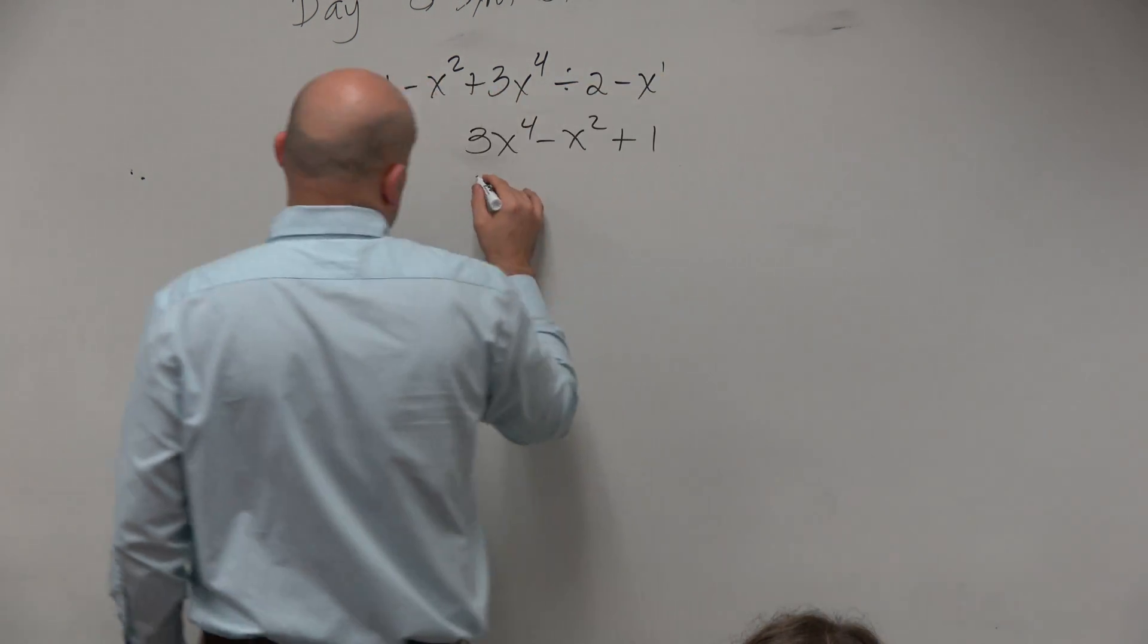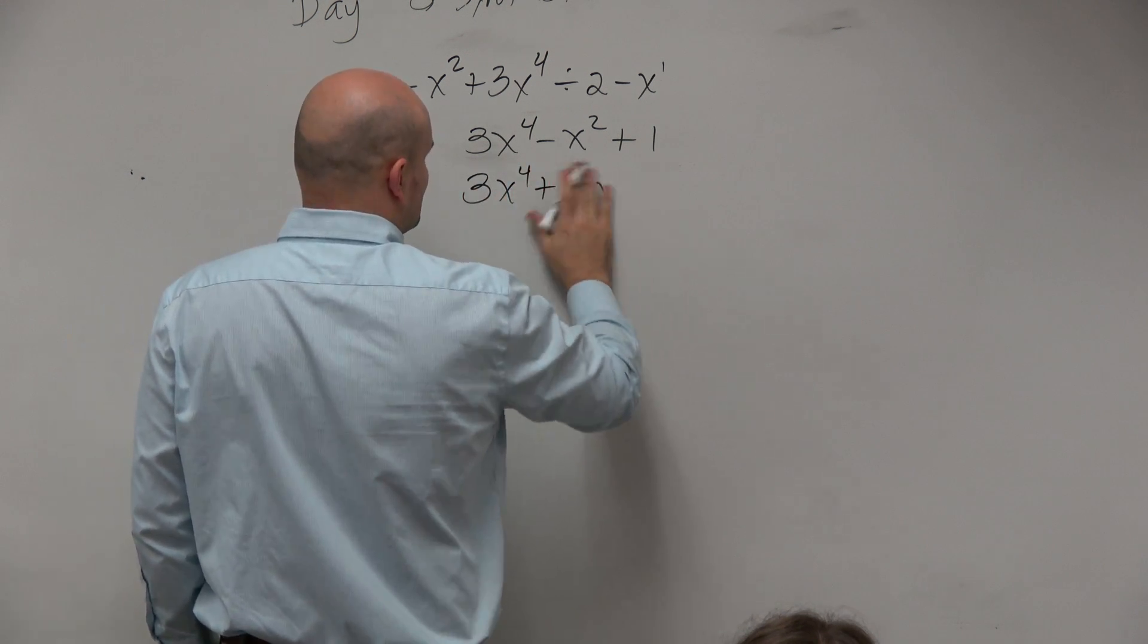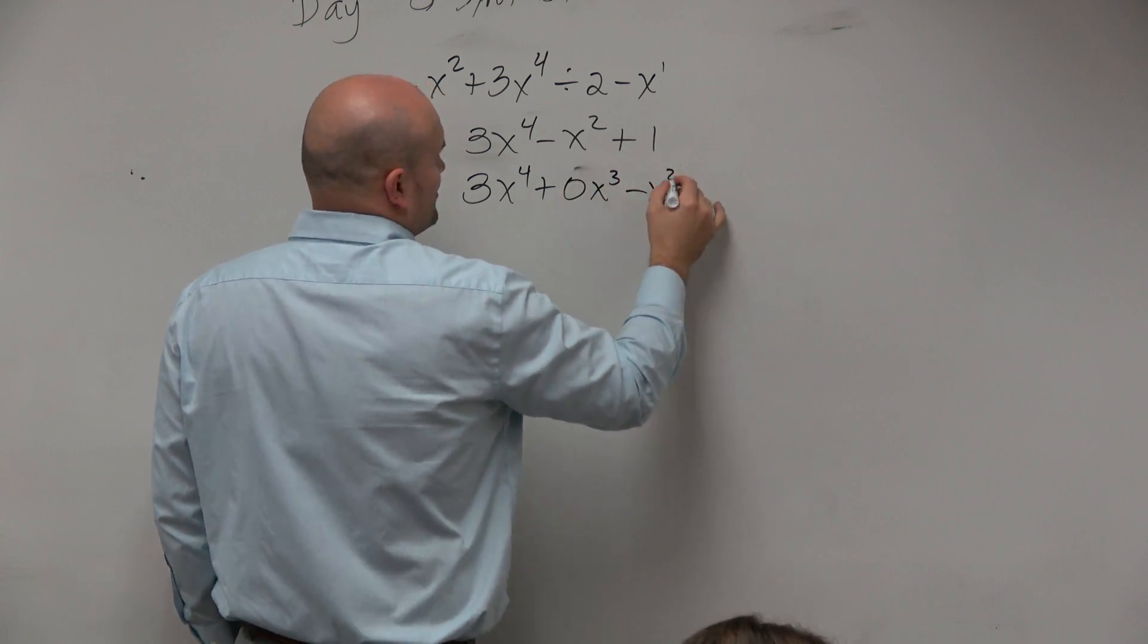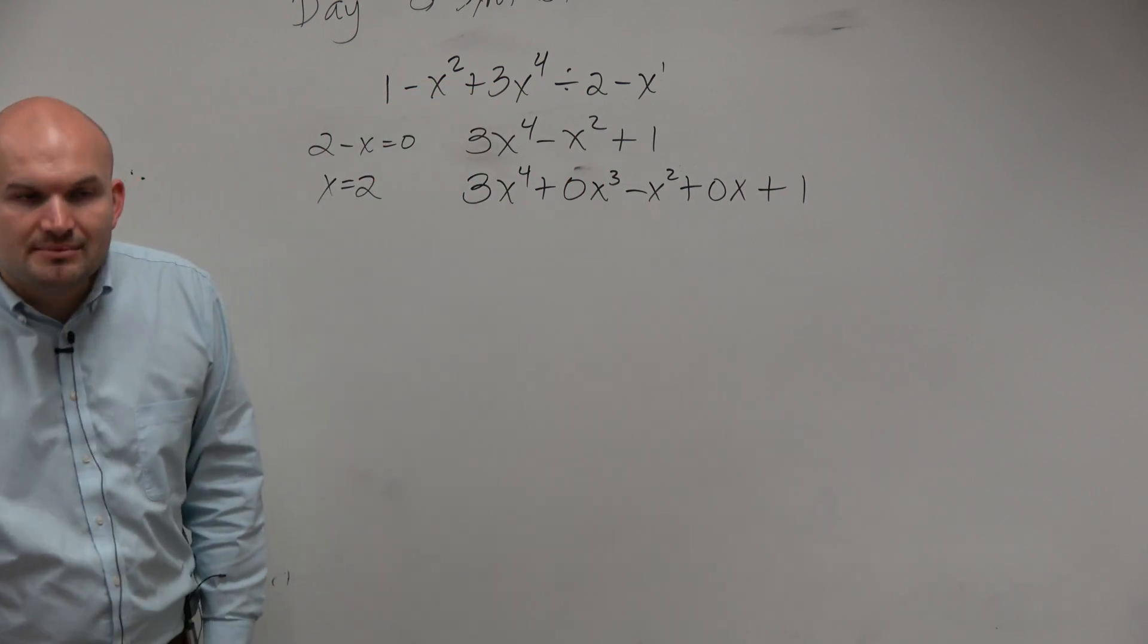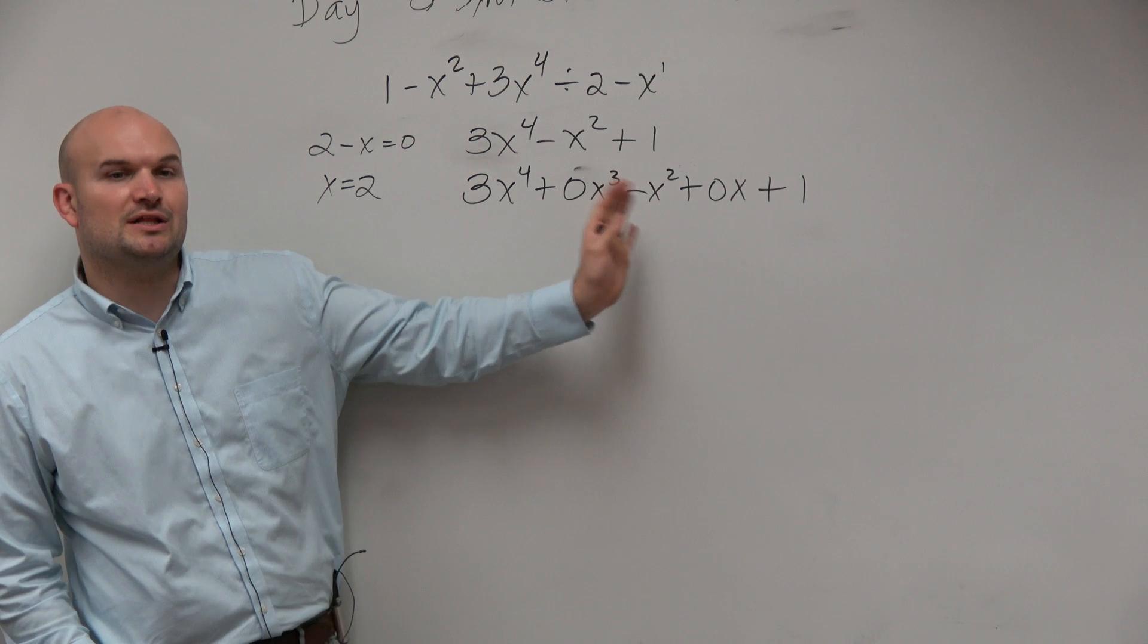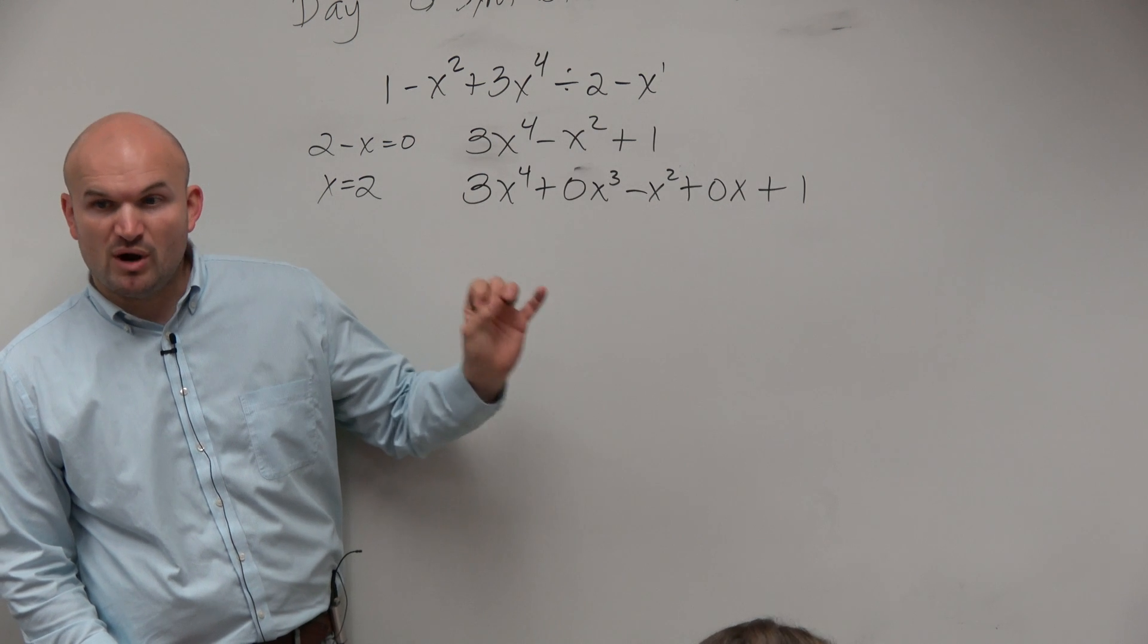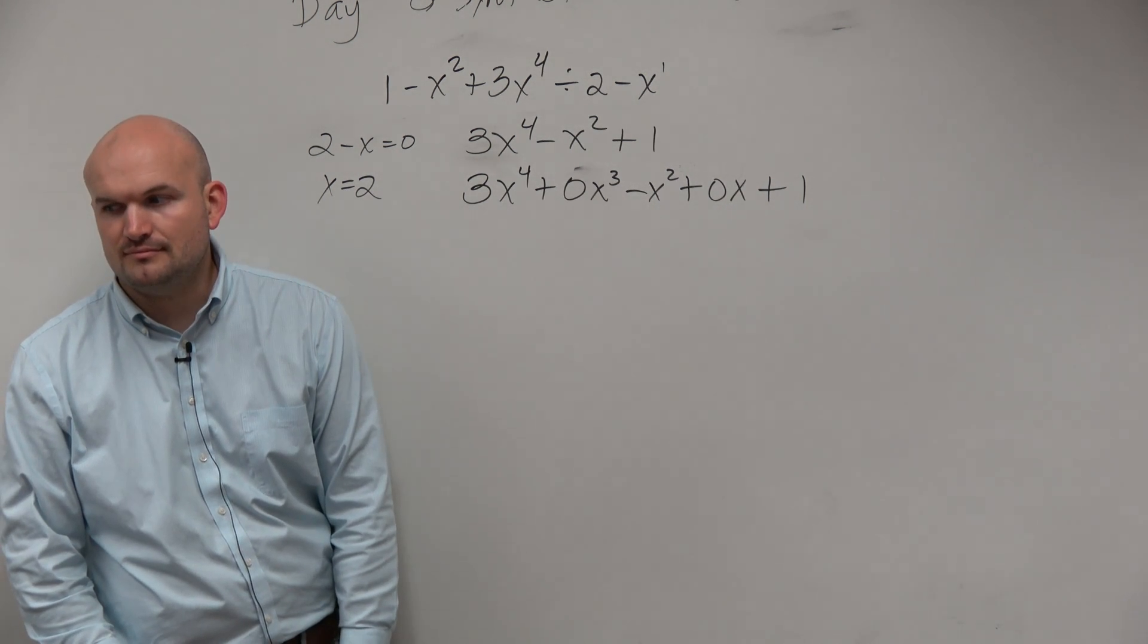So what we want to do in this case is just rewrite this as 3x to the fourth plus 0x cubed minus x squared plus 0x plus 1. It is extremely important, guys, that we understand that for synthetic division, we have to make sure we include these place values. It wasn't required for long division. It was required for our synthetic division, okay?